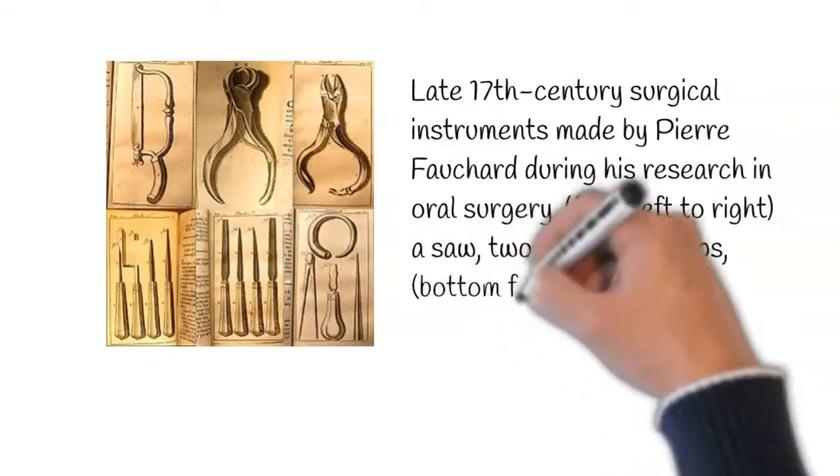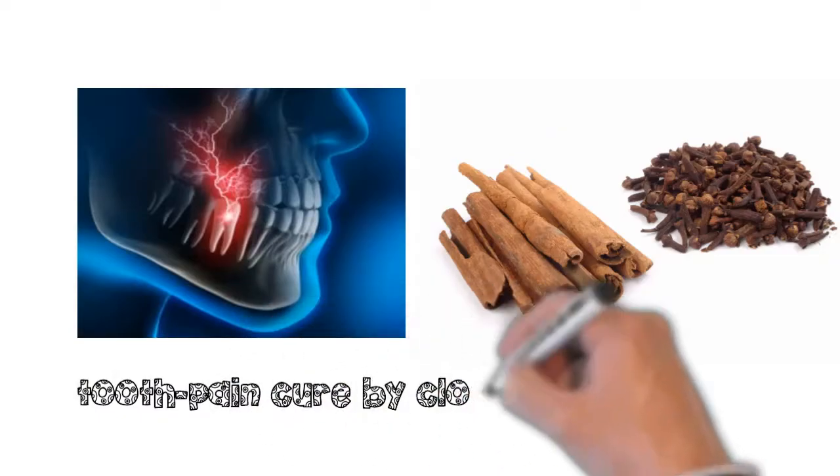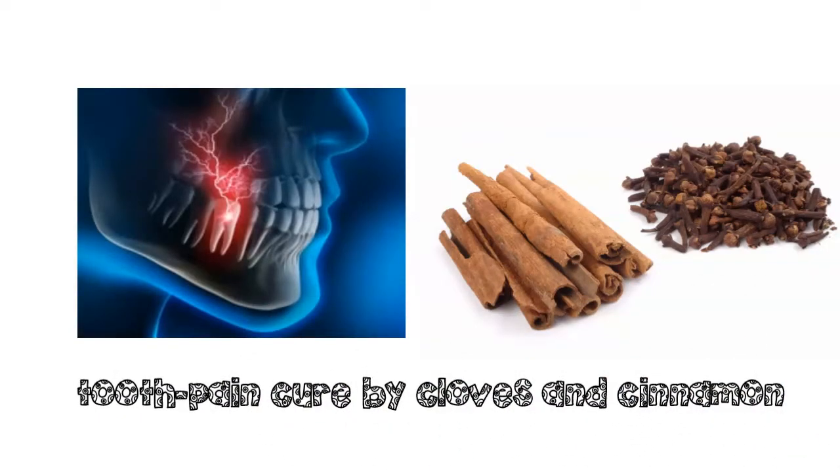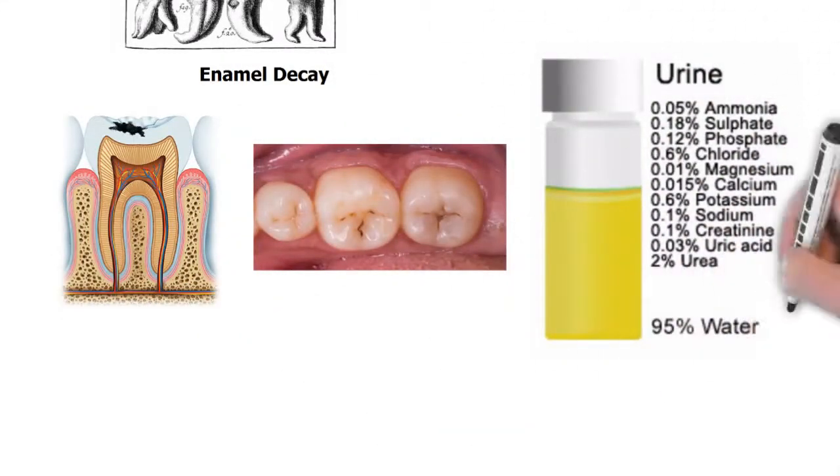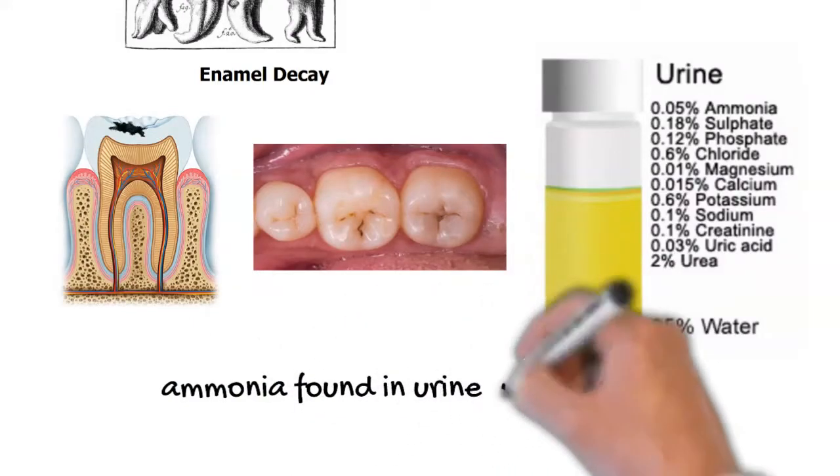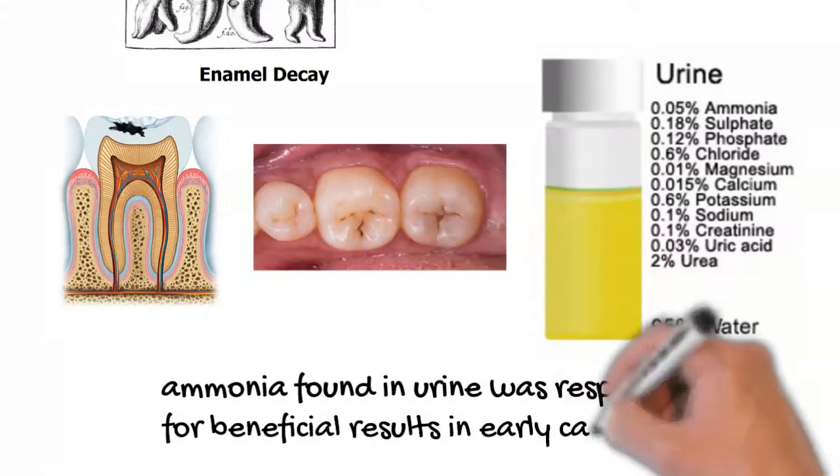You will now be fascinated by knowing that a very popular household treatment of tooth pain with cloves and cinnamon was also suggested by him. A very horrible thing which he recommended was the use of human urine in the treatment of early stage caries. Ammonia, which was not then identified, was responsible to show the beneficial result of urine.